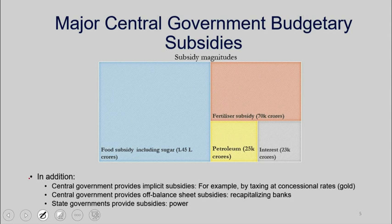That's an implicit subsidy. Governments can provide off-balance-sheet subsidies, for example to the banks, and that's not captured in this. Not just the central government, but state governments provide subsidies. Power and water are very good examples. So when you look at the central government budget, that is not a complete picture of the total subsidies provided by the government.